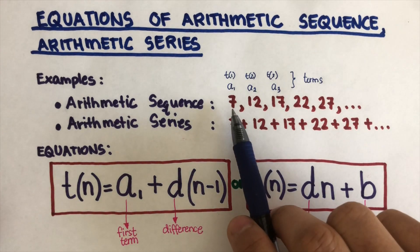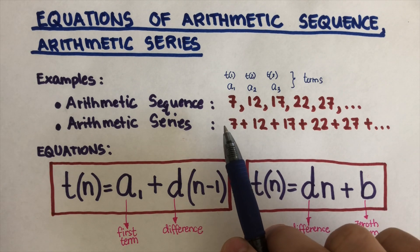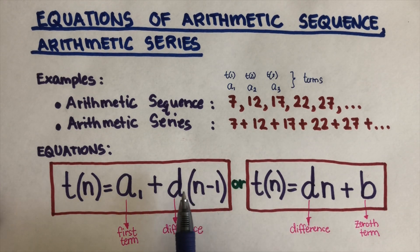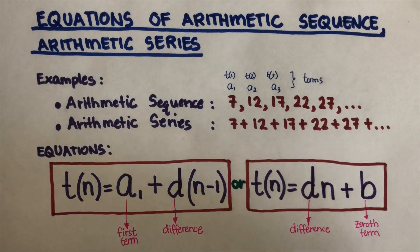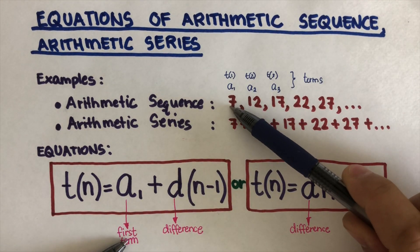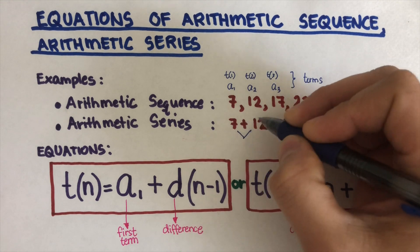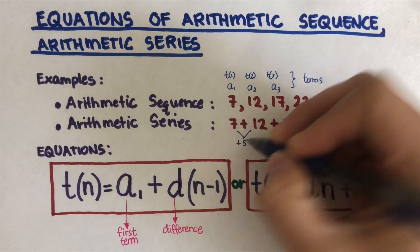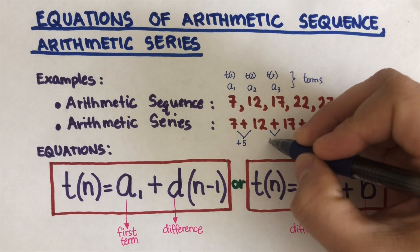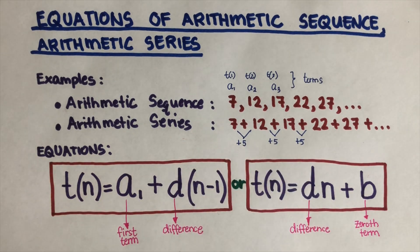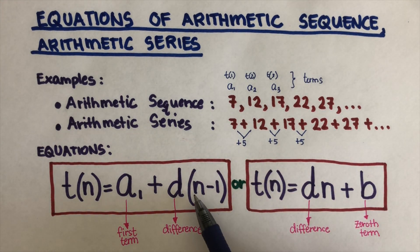To find an equation that works for an arithmetic sequence or series, we're going to use one of two equations — both will give the same answer. The first is: t of n equals a1 plus d times (n minus 1), where a1 is the first term and d is the difference — how much it grows by. In this example, from 7 to 12 it's adding 5, so 5 is the difference.